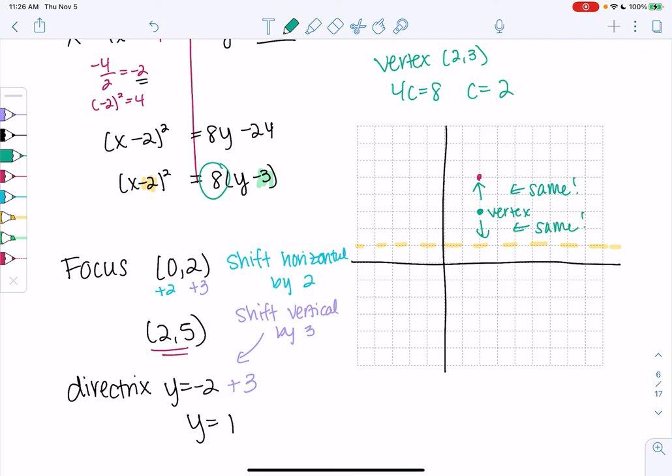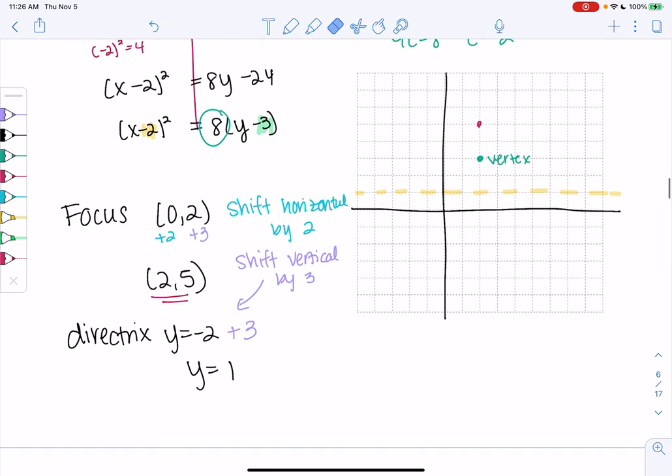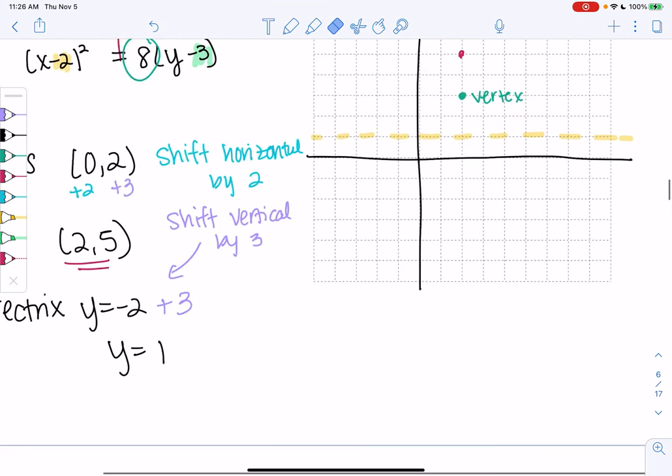So that's good. Last thing we need to know is, does it go this far out, this far out? We'll use those special points. We have to shift those special points. Those special points were only for a vertex of 0. So (-2c, c) and (2c, c). But we need to shift.